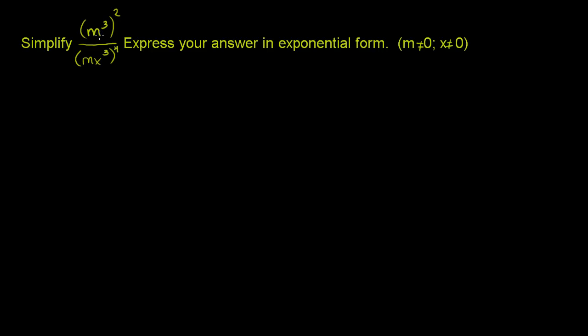We're asked to simplify m to the third and then that squared all over mx to the third, all of that to the fourth power. And they want us to express our answer in exponential form, and then they tell us that m does not equal 0 and x does not equal 0, because if they did, then this denominator would be equal to 0, and then it would just be undefined. So that's why they had to put that little caveat there, that neither of them are going to be equal to 0.